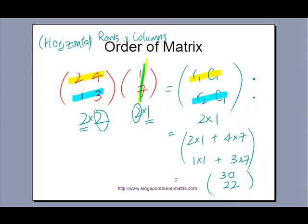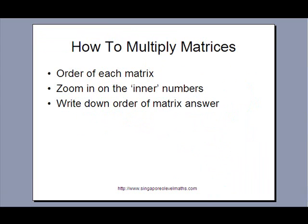So, let us summarize what we have talked about so far. How to multiply matrices. First, you need to write down the order of each matrix. After which you zoom in on the inner numbers. Make sure that the two inner numbers are the same before you can carry on multiplication. And then, write down the order of the matrix answer. And the order of the matrix answer, you can just simply get it from the two outer numbers that is remaining.